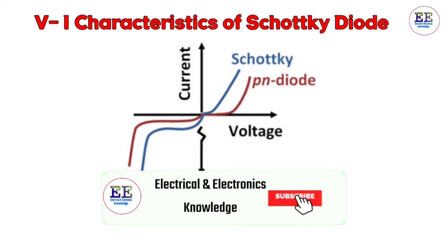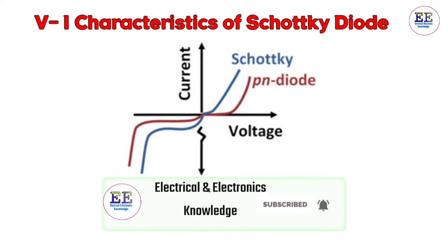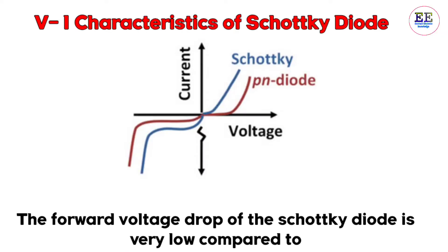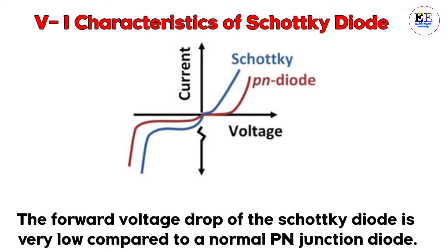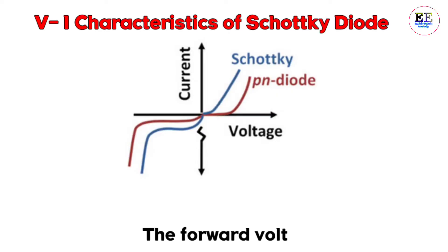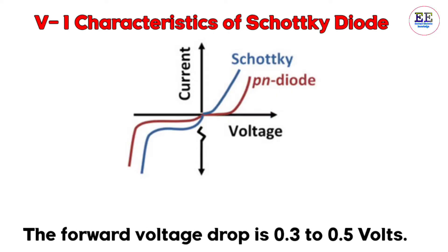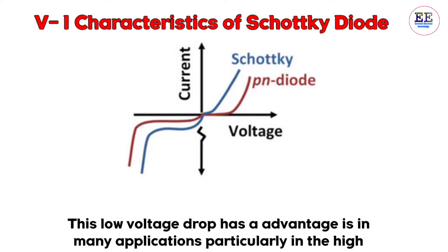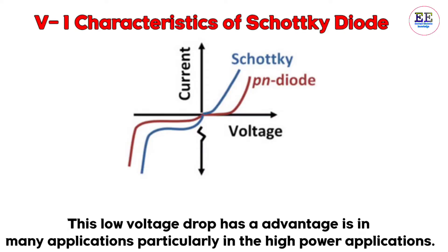Now let's see the Schottky diode's VI characteristics. The VI characteristics show that the forward voltage drop of the Schottky diode is very low compared to the normal PN junction diode. The forward voltage drop is 0.3 to 0.5 volts, and this low voltage drop is an advantage in many applications, particularly in high-power applications.